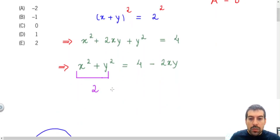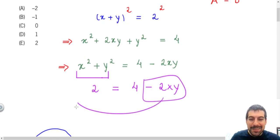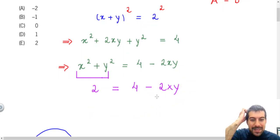So this term is 2, so we know that 2 will equal 4 minus 2xy, and in fact, I will send this term to this side and I will change the sign again.